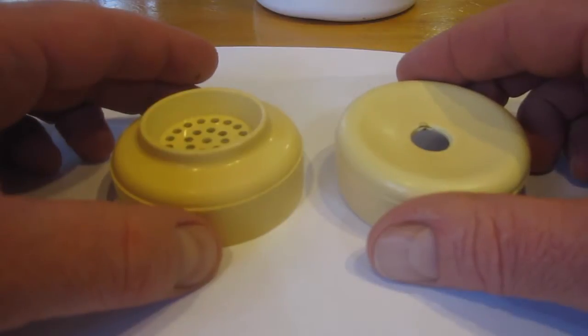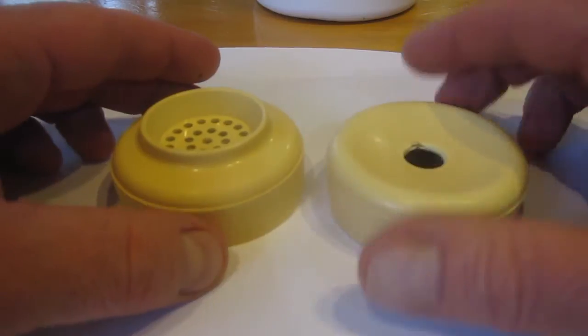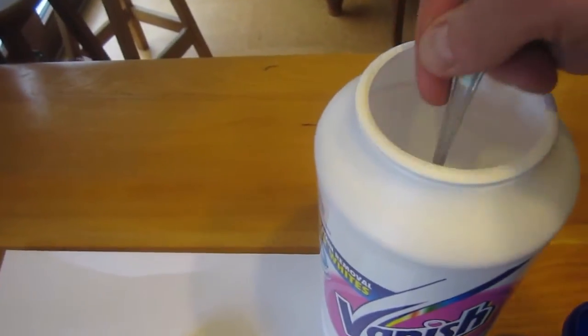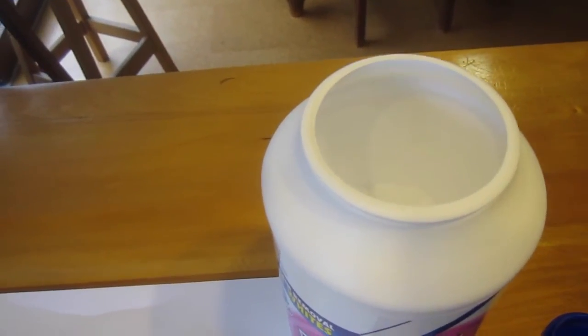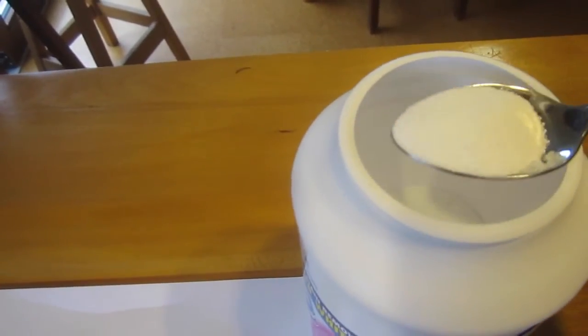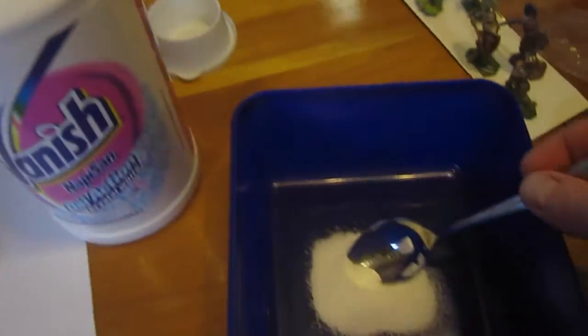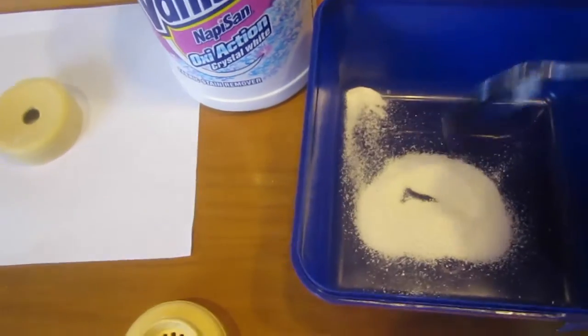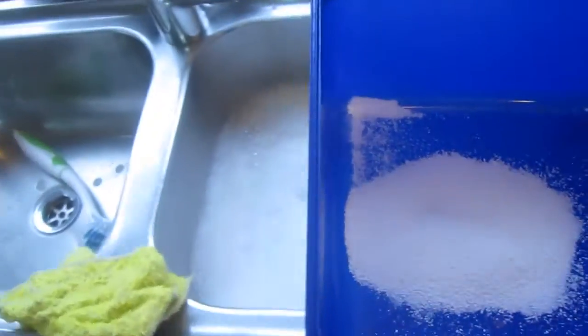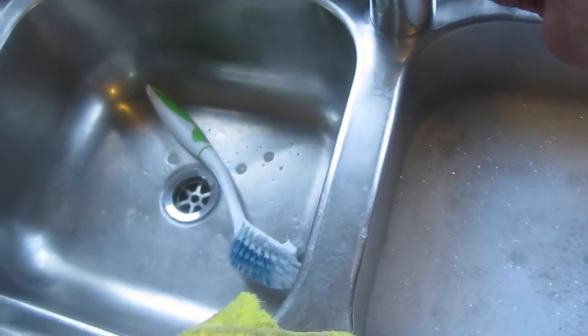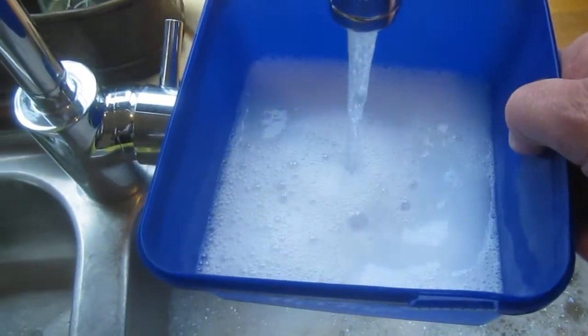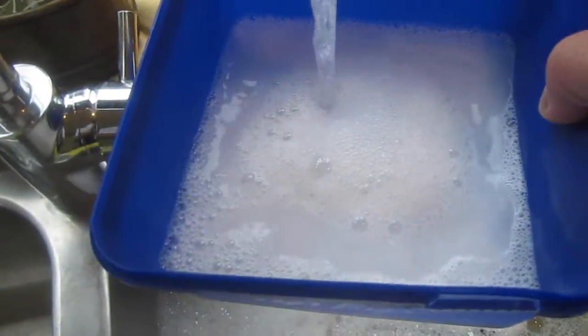I'll pick one of them and put that in a solution of this vanish nappy san oxy action sodium percarbonate. I'm going to put a couple tablespoons of this powder into an ice cream bottle and hot water. I just want to fill it up so that it covers the mouthpiece I'm going to stick in.